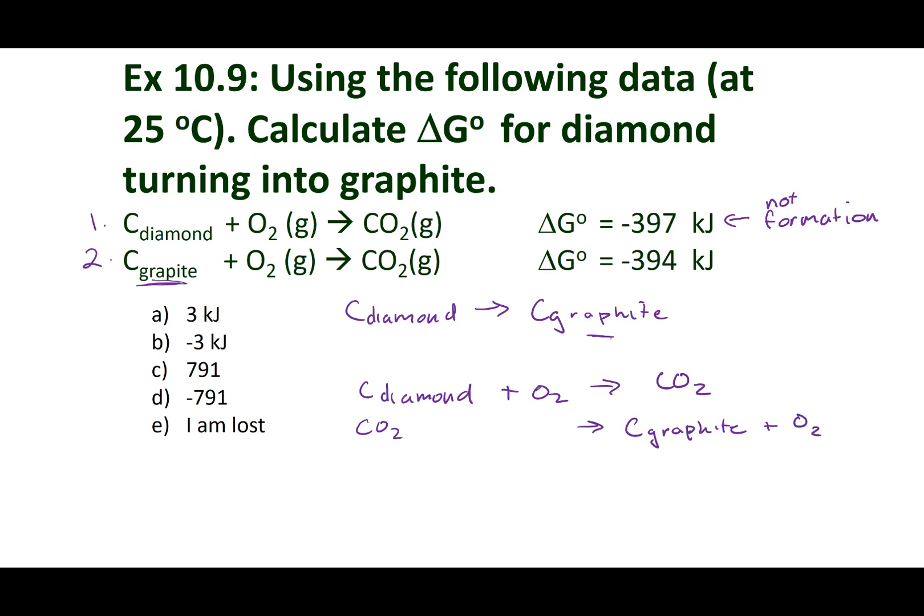Now, I want to write down the delta G's associated for each reaction. So for the first reaction, I did nothing to it, so negative 397. But for the second reaction, I went ahead and flipped it. And because I flipped the reaction, we are going to go ahead and times our delta G by negative 1.